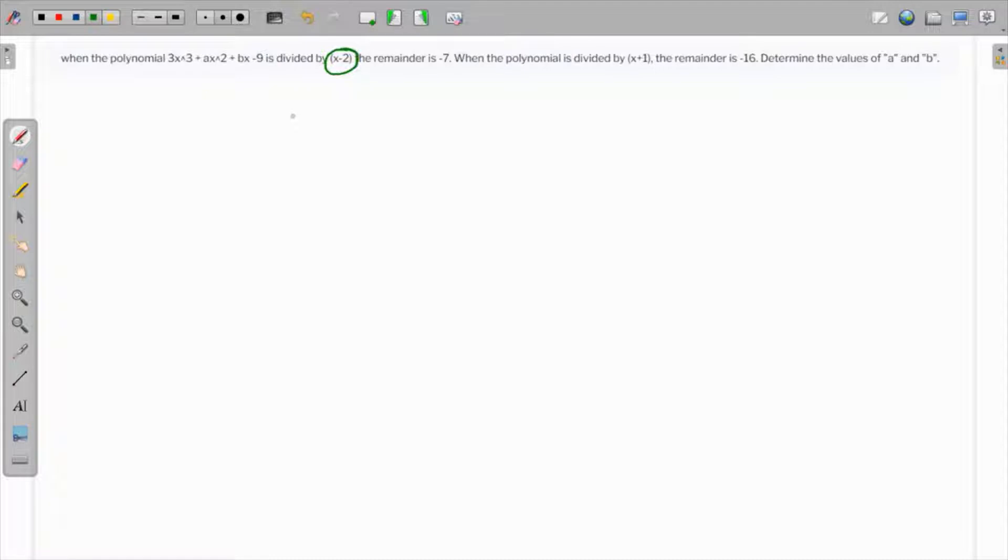If we equate x minus 2 to 0, we get a value of x equal to 2. So what we can do is substitute this value into the polynomial.